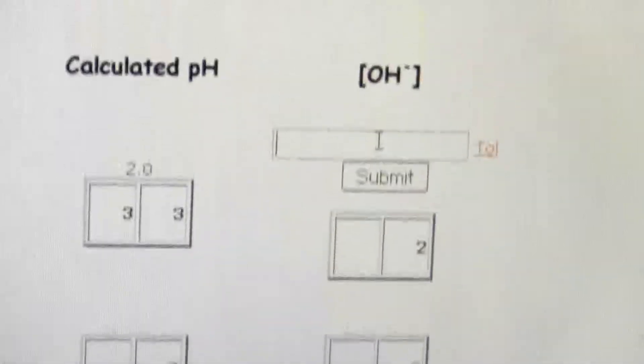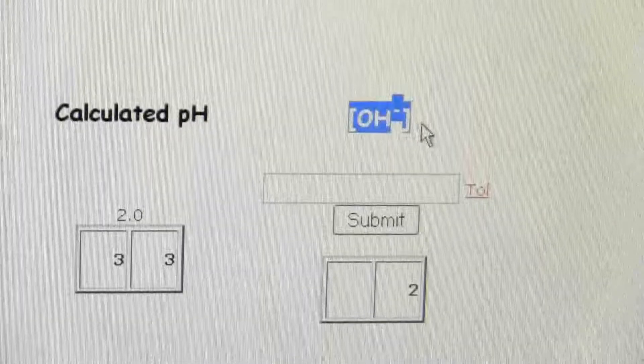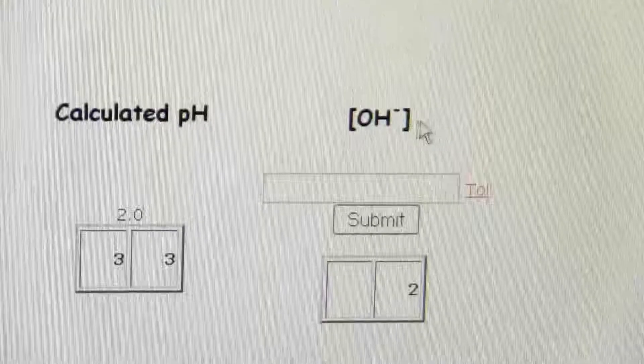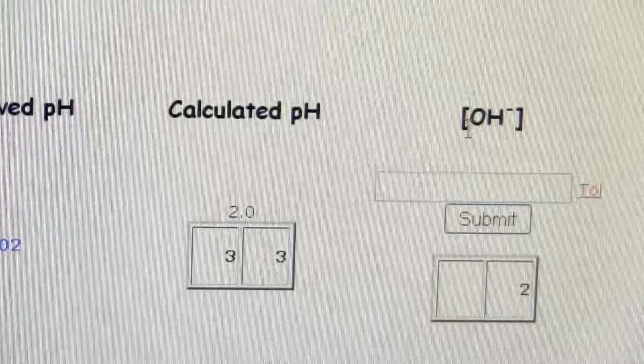Alright, so now this one, it's wanting the hydrogen or the hydroxide ion concentration. Remember the brackets mean concentration, molarity.